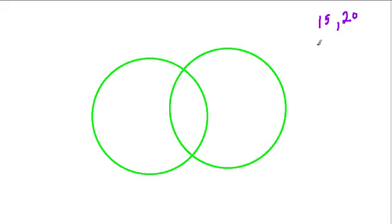Well, what are the factors of 15? Well, 5 times 3. Those are our prime factors. And 20 is 2 times 10. 10 is 2 times 5. Circle my prime factors.